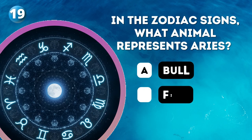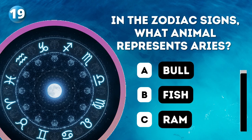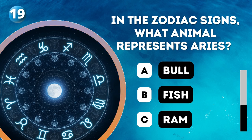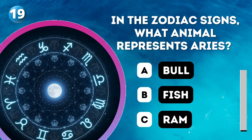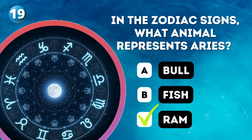Question 19. In the zodiac signs, what animal represents Aries? A. Bull, B. Fish, C. Ram. Answer: Ram.